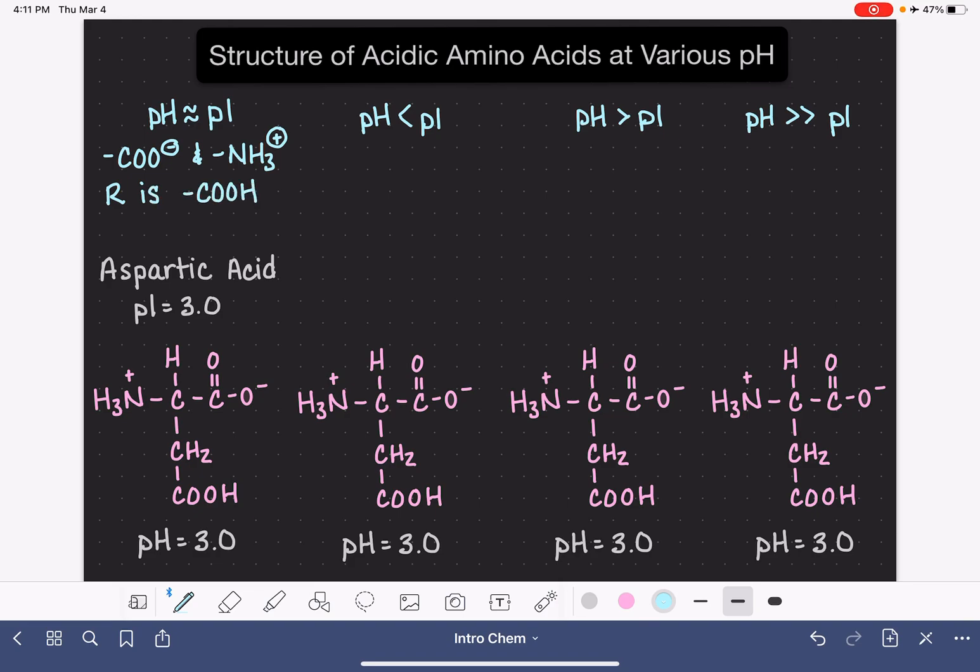It's going to look like this: whatever acidic amino acid you have, your amino group is going to be NH3 plus, your acid group is going to be COO minus, and then whatever your R group might be, the acid group that's on your R group is going to be in the COOH form. The overall charge for an acidic amino acid when it is at its pI is neutral because we have a positive charge and we have a negative charge and they're balancing each other out.